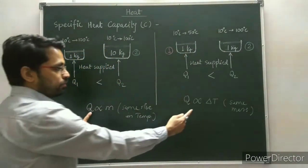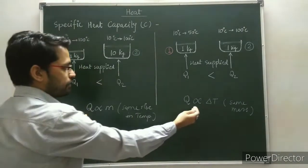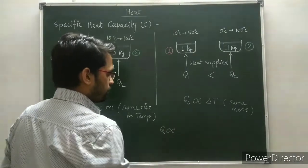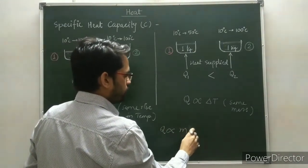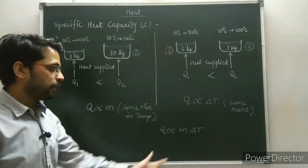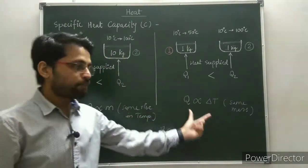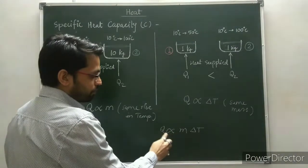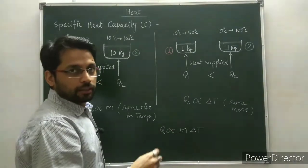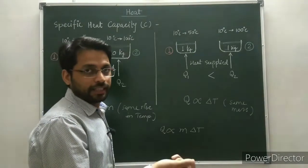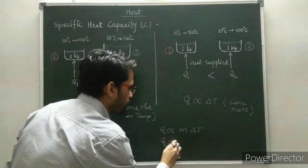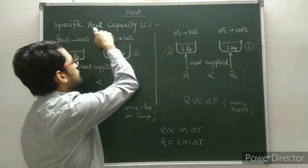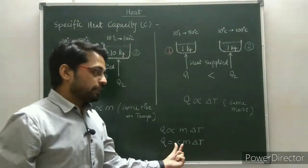From these two relations, we can merge them and write: Q is directly proportional to m·ΔT. When we remove the proportionality sign, we introduce a constant, so Q equals C·m·ΔT. Here, C is the specific heat capacity of the material whose temperature is going to change by supplying heat Q.